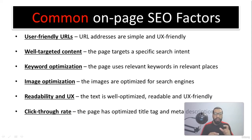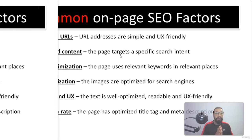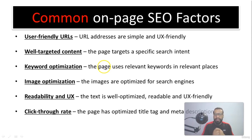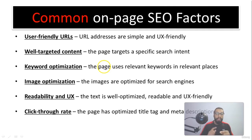Well-targeted content means the page targets a specific search intent. Keyword optimization means the page uses relevant keywords in relevant places. Image optimization means images should be optimized for search engines. Text readability means the content is well-optimized, readable, and UX-friendly. Click-through rate means the page has optimized title tags and meta descriptions so it appears appealing in search results and you get maximum click-through rate.